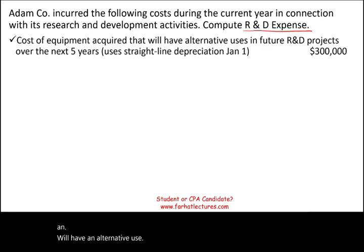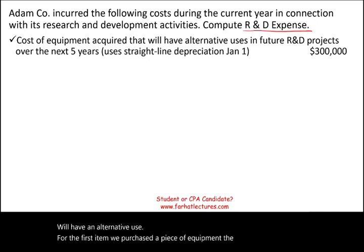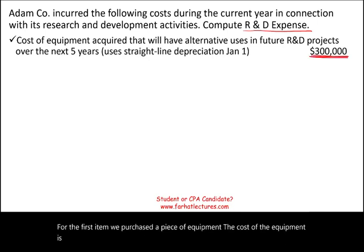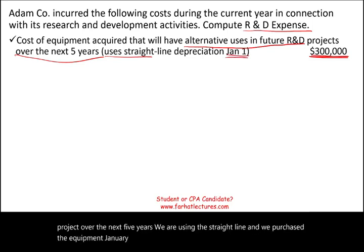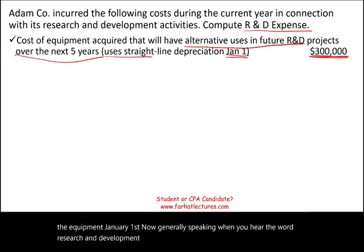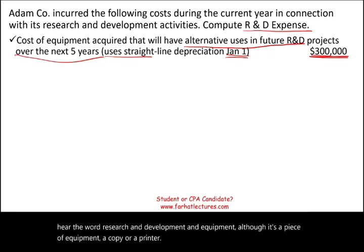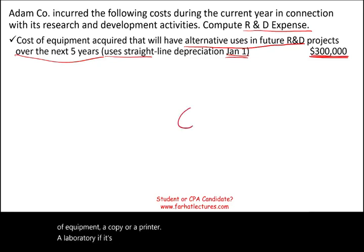For the first item, we purchased a piece of equipment. The cost of the equipment is $300,000. However, the equipment will have alternative uses in future R&D projects over the next five years. We are using straight-line depreciation and purchased the equipment January 1st. Generally speaking, when you hear the words research and development and equipment — although it's a piece of equipment like a copier, a printer, a laboratory — if it's for R&D, we expense.